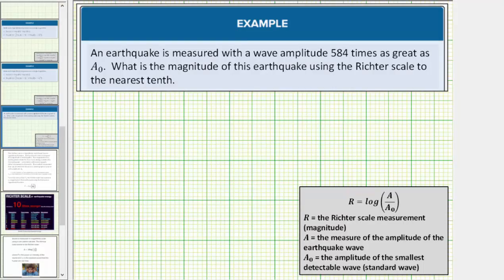we know we'll be using this equation or function to determine the magnitude of the earthquake, and we're given the earthquake is measured with a wave amplitude 584 times as great as A₀. So because A equals the measure of the amplitude of the earthquake wave, we know A must equal 584 times A₀.